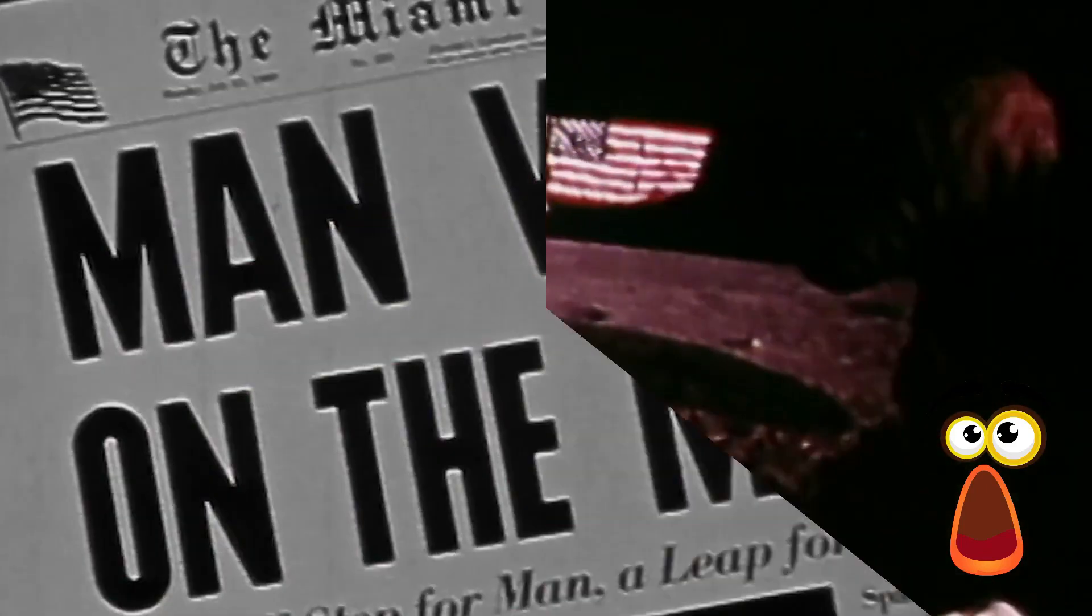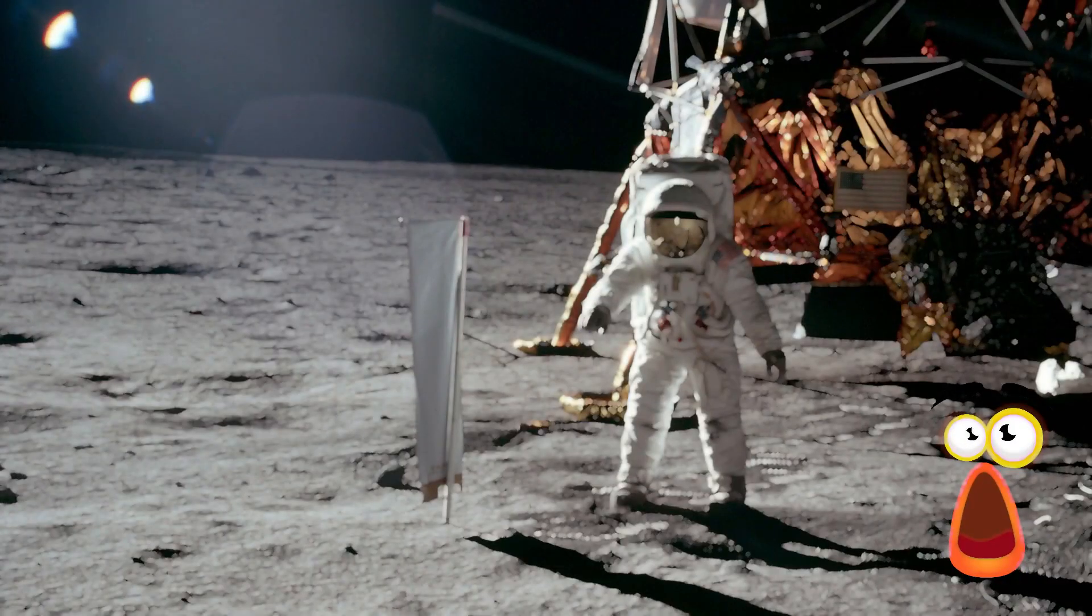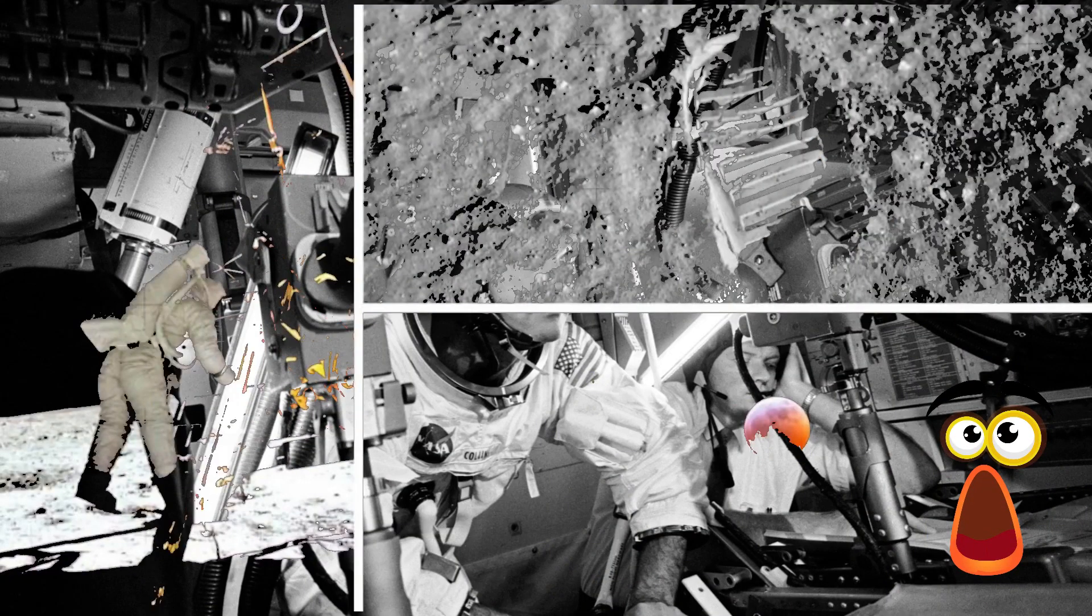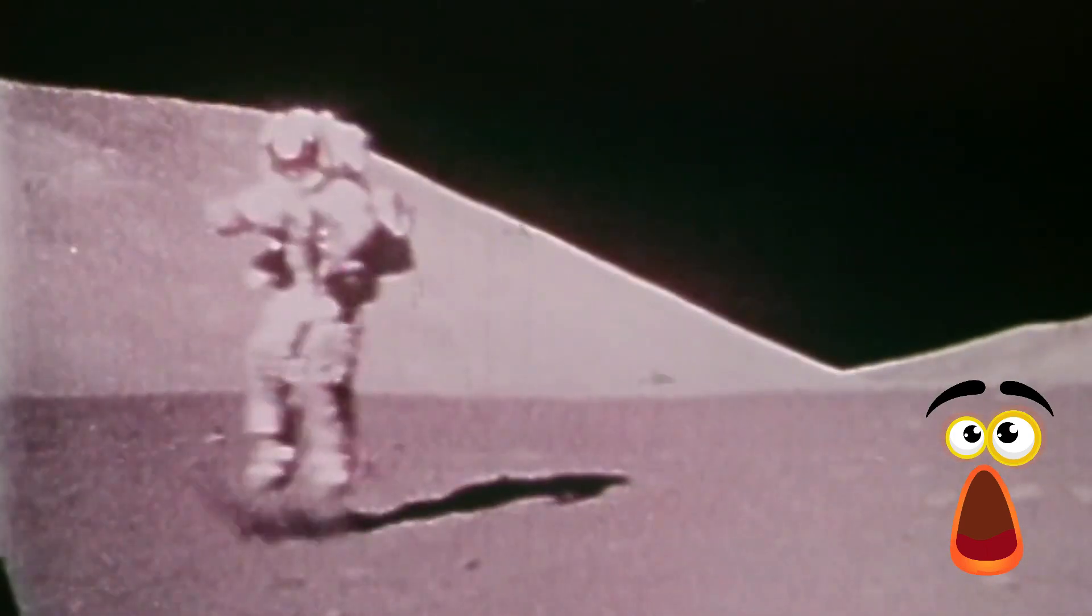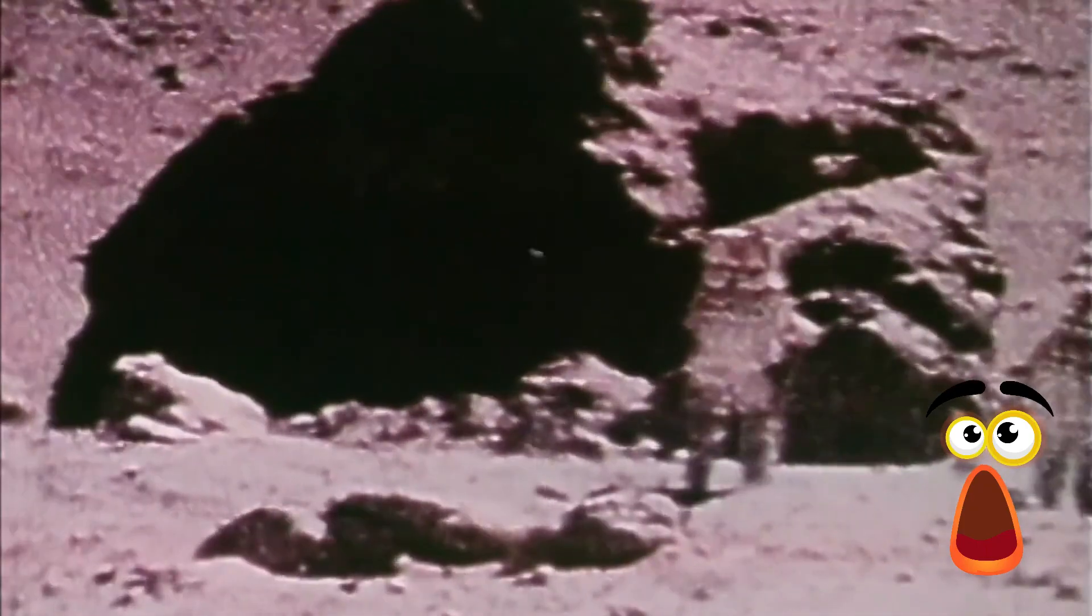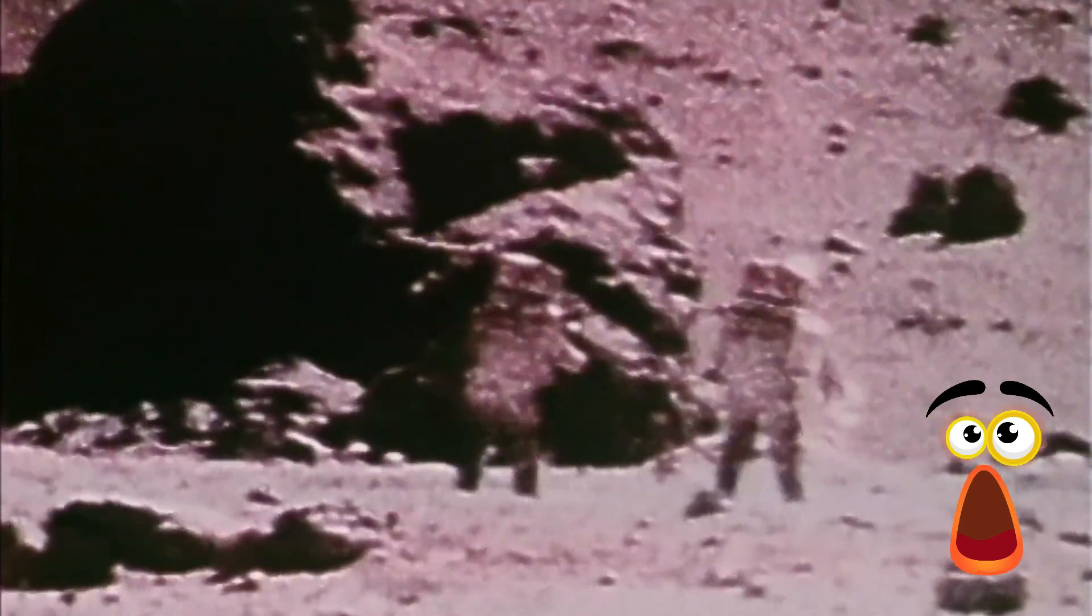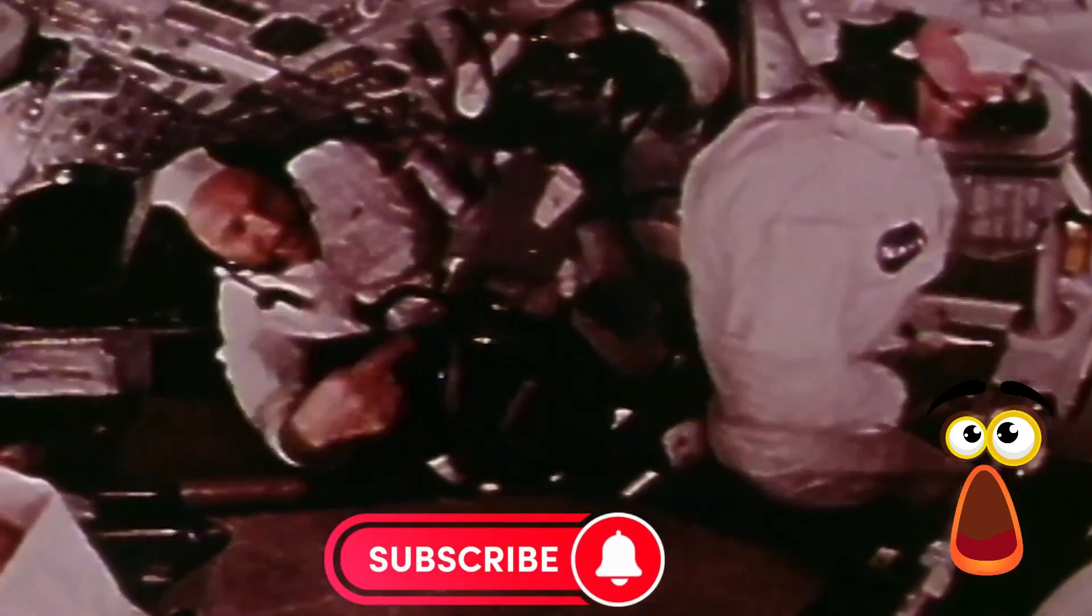On July 20, 1969, at 4:17 p.m. Universal Time Coordinated, Neil Armstrong's voice echoed over the speakers, sending a message that would reverberate throughout history. The first person to set foot on the Moon was Neil Armstrong, who was quickly followed by Buzz Aldrin. The hopes and desires of countless generations had materialized in that moment of wonder.